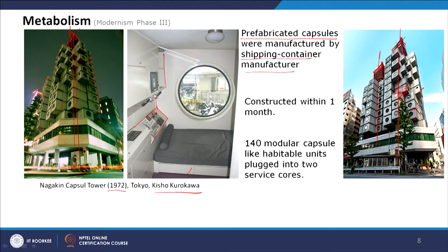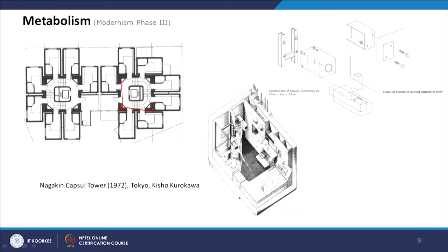Looking at the plan, the service core contains the staircase, lift lobby, and service ducts. From this core, different arrangements are possible — capsules can be oriented in different directions, creating symmetry or losing it. The design can be arranged vertically or horizontally from the service core. The design is totally dependent on how you want to use the module — it can be reoriented and is fluid.